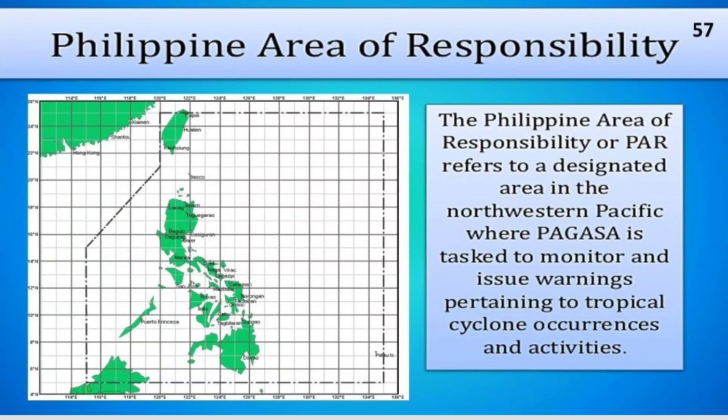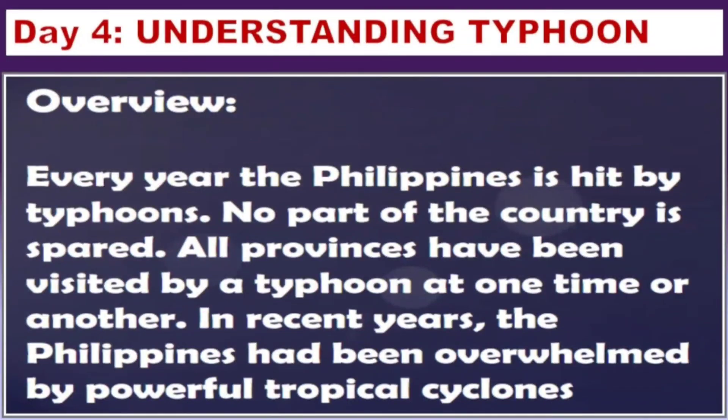One important term to emphasize: PAR, or the Philippine Area of Responsibility. The Philippine Area of Responsibility refers to a designated area in the northwestern Pacific where PAGASA is tasked to monitor and issue warnings pertaining to tropical cyclone occurrences and activities. To summarize: every year the Philippines is hit by typhoons — no part of the country is spared, and in recent years the Philippines has been overwhelmed by powerful tropical cyclones.